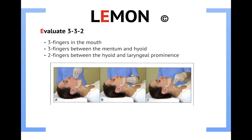The E stands for Evaluate — specifically, evaluate the 3-3-2 rule. If you take the patient's three fingers — ring, middle, and index — and they fit nicely between their teeth, the bigger this opening is, the easier it is to perform laryngoscopy. The first measurement is how wide the patient can open their mouth. The next is the distance between the mentum — the chin bone — and the hyoid bone, where the bend takes place; three or more fingers here is better. Last, the two refers to the distance between the hyoid bone and the larynx — again, greater distance is better. If you're only able to do 1-1-1 when you evaluate your patient, you can anticipate difficulty with intubation.